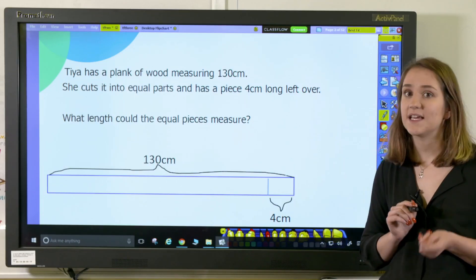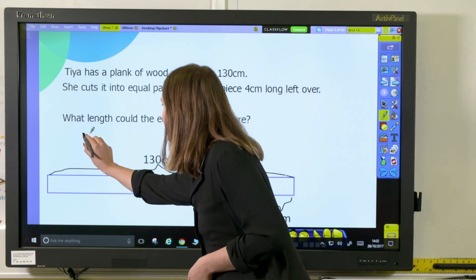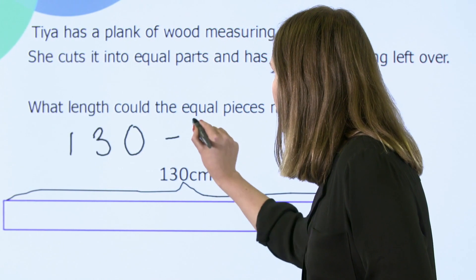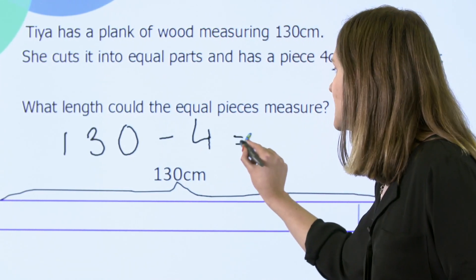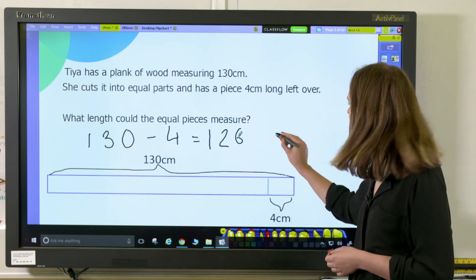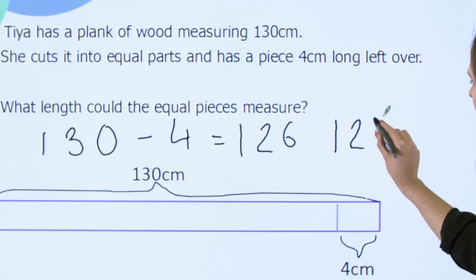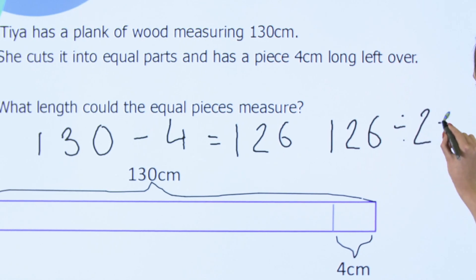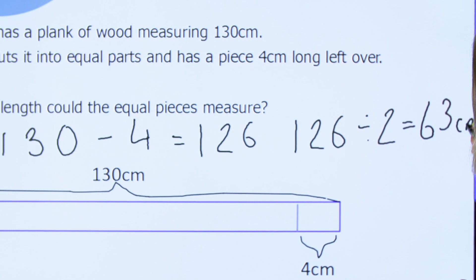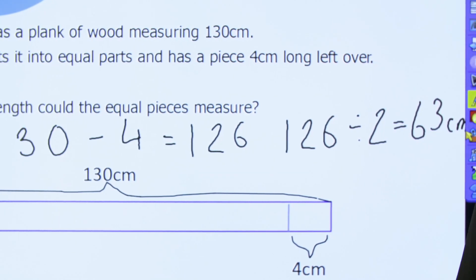So you might decide you're going to split it into two equal parts. So first of all I'm going to do 130 take away 4, which will give me 126. I can then split my 126 into two equal parts, which tells me that each piece of wood is going to be 63 centimeters long.